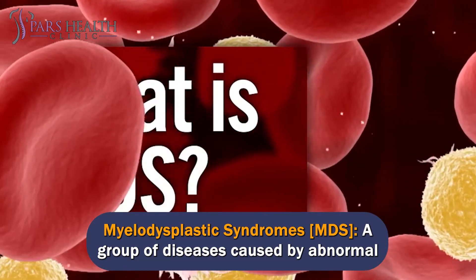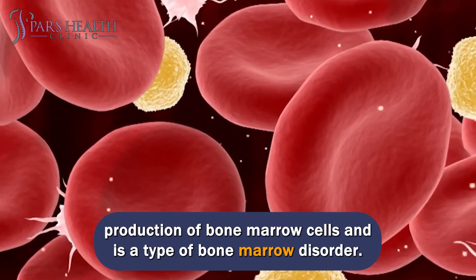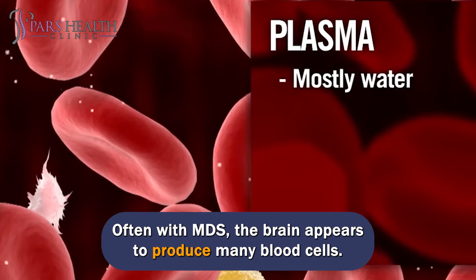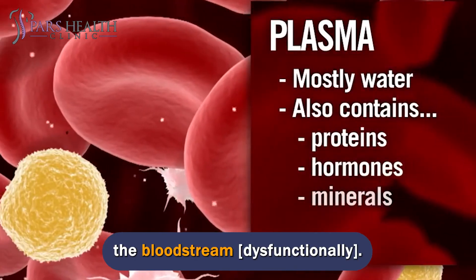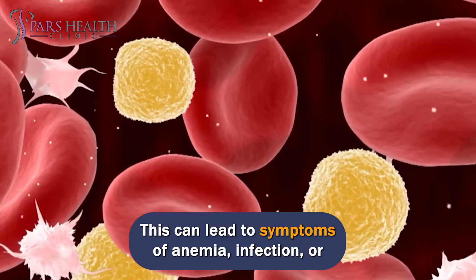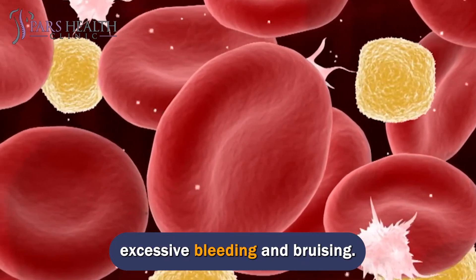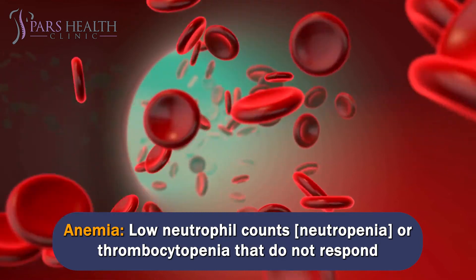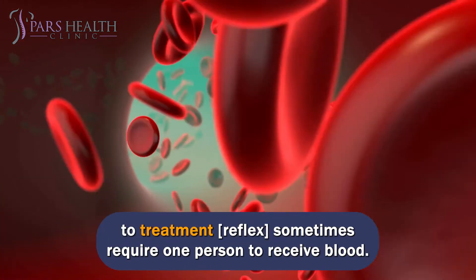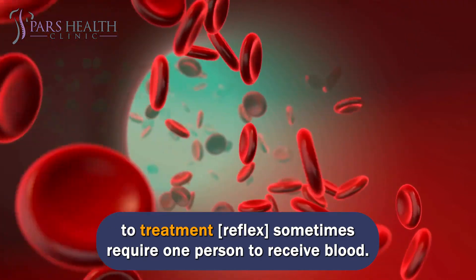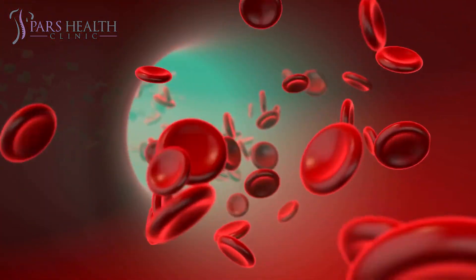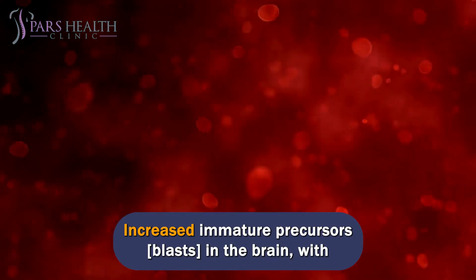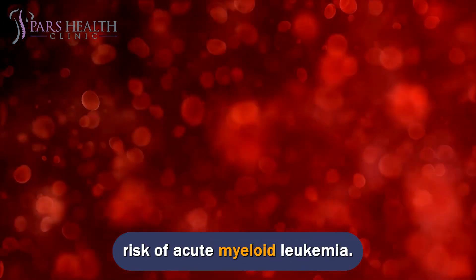Myelodysplastic syndromes, MDS, are a group of diseases caused by abnormal production of bone marrow cells. Often with MDS, the marrow appears to produce many blood cells, but they are defective and die before they can be released into the bloodstream. This can lead to symptoms of anemia, infection, or excessive bleeding and bruising. Refractory anemia, low neutrophil counts (neutropenia), or thrombocytopenia that do not respond to treatment sometimes require blood transfusions. MDS is also characterized by dysplasia — the appearance of abnormal cells in one or more cell lines — and increased immature precursors (blasts), with risk of progression to acute myeloid leukemia.